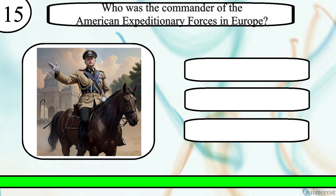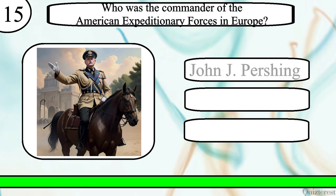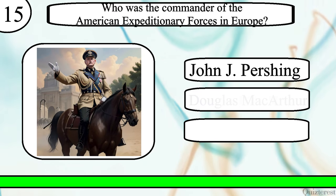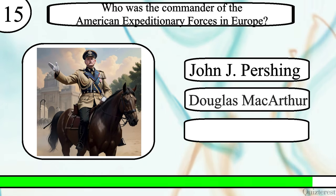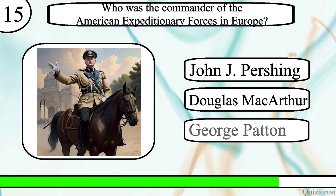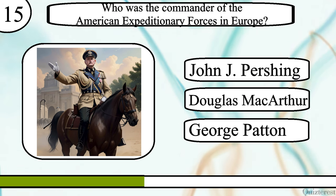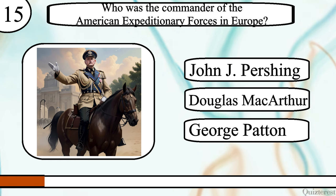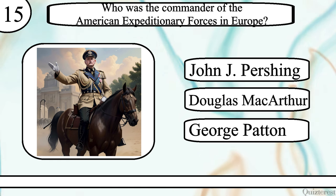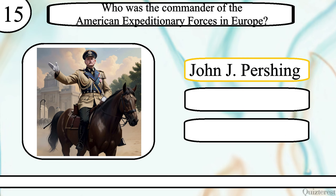Question 15. Who was the commander of the American Expeditionary Forces in Europe? John J. Pershing, Douglas MacArthur or George Patton? The correct answer is John J. Pershing.